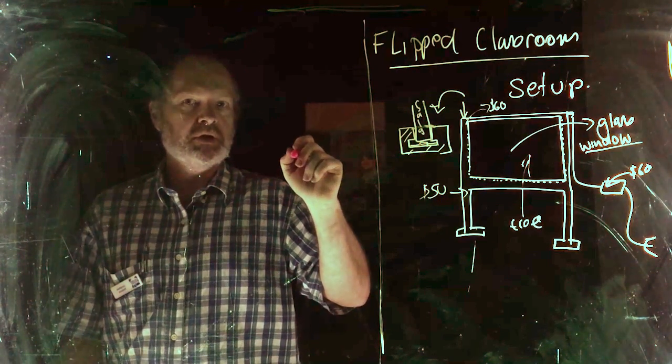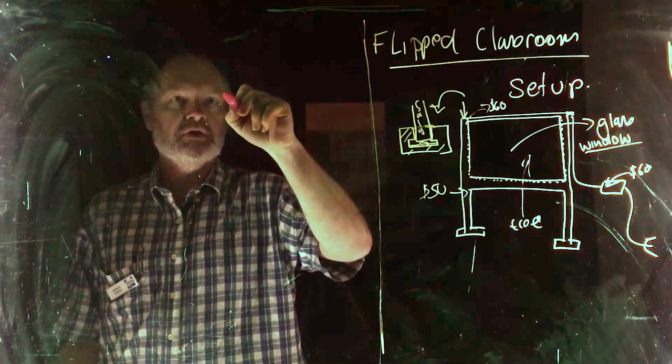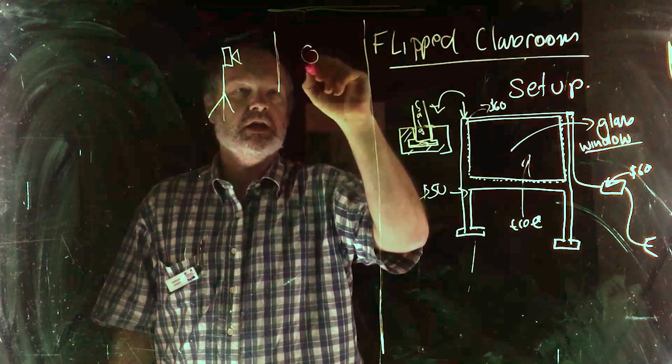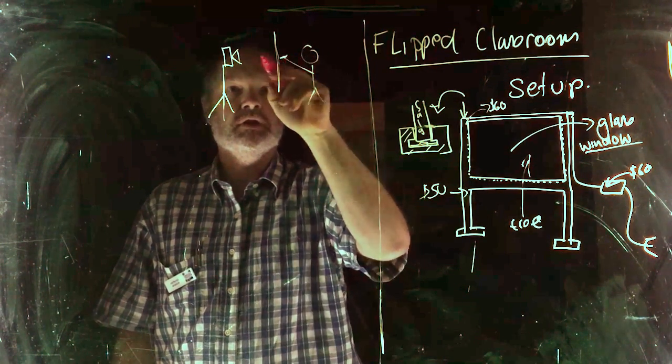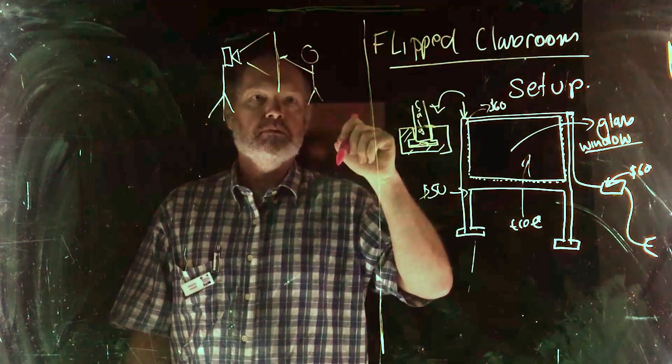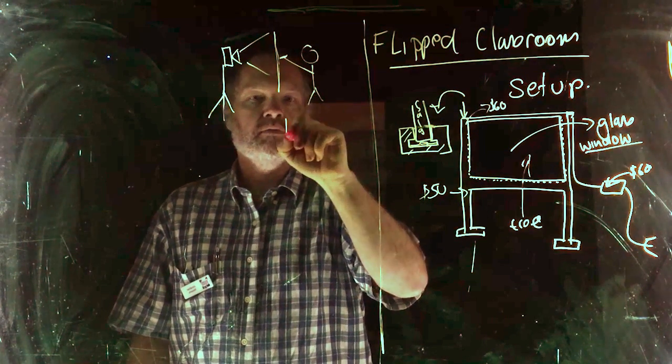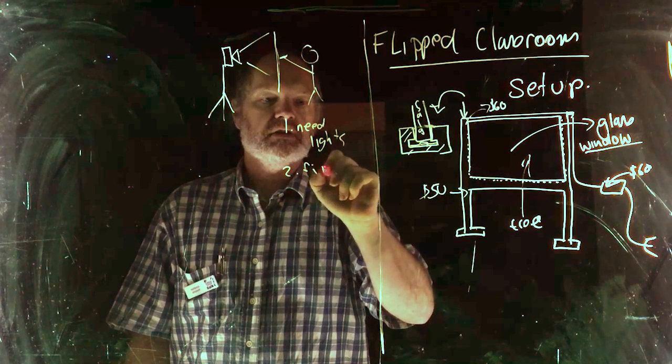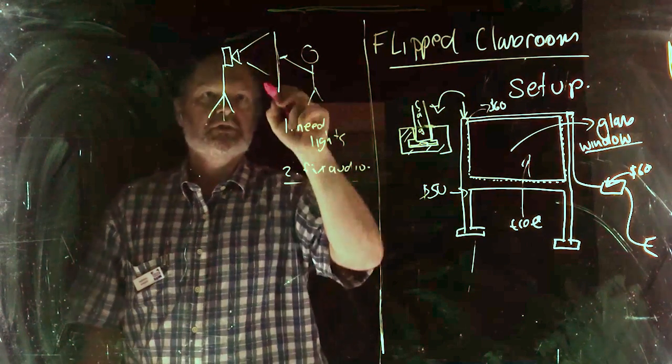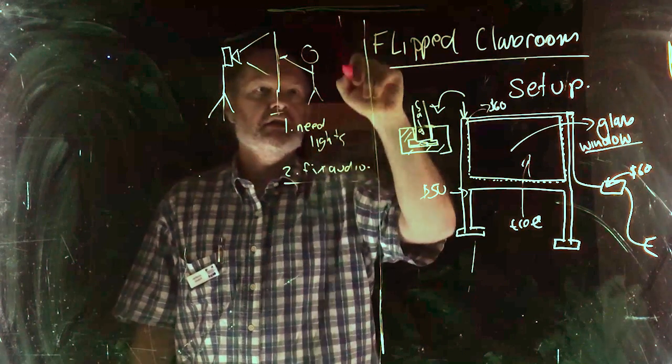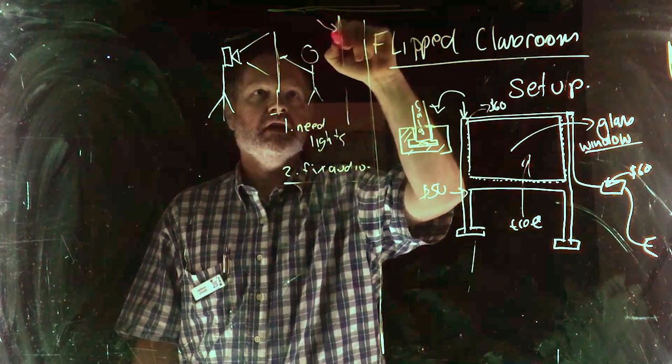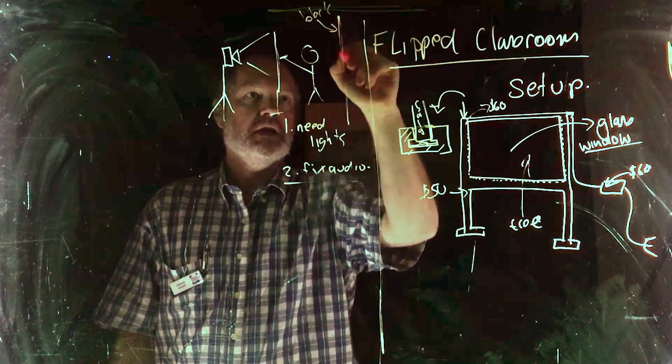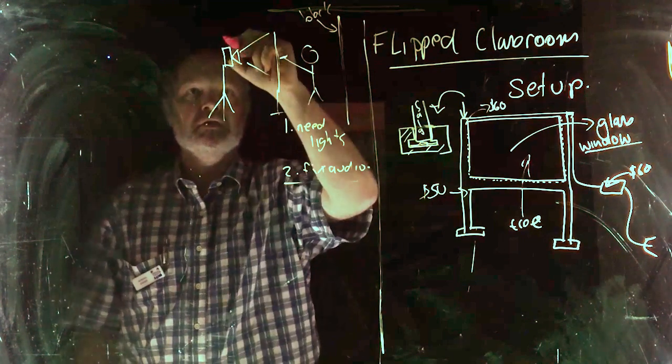Step two is the camera setup. We've got a tripod with the camera, and we have the board sitting here to draw on. At the moment, there are no lights, so we need lights to fix audio. That's step two. I have a dodgy black backdrop.